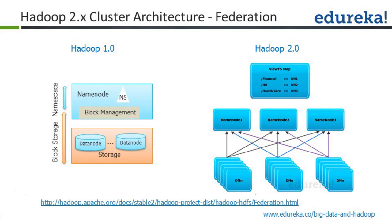In a federated name node, instead of one single name node, you have a small cluster of name nodes — a series of name nodes joined together. Each name node gives a part of its hard disk as a shared location on a network hard disk where metadata can be stored. These shared locations are called block pools, and they are used for storing your metadata information.